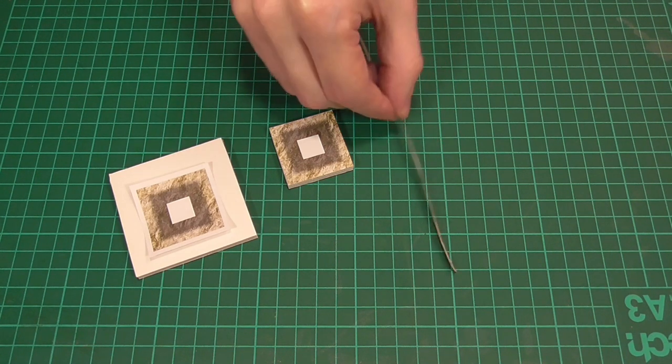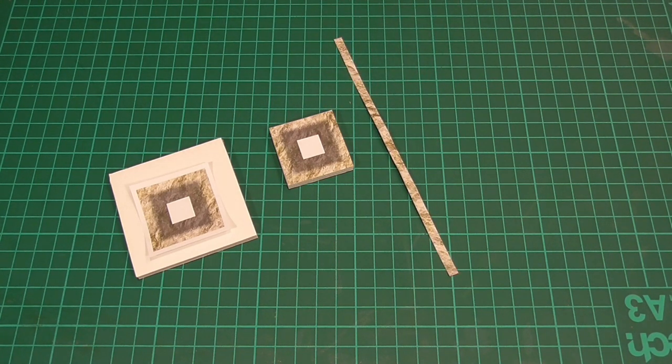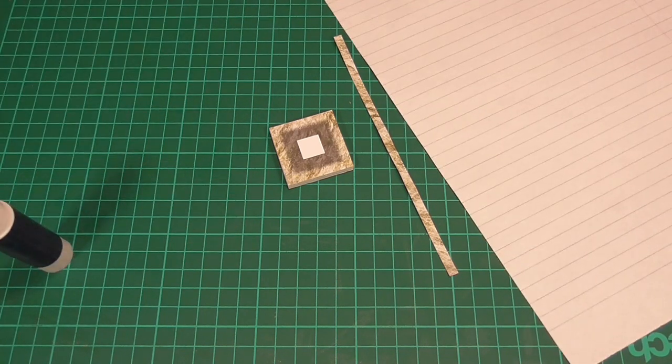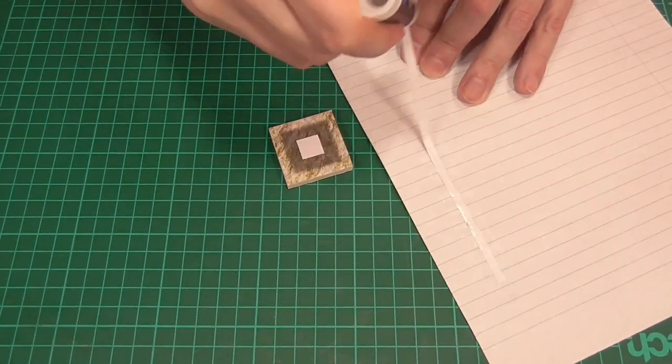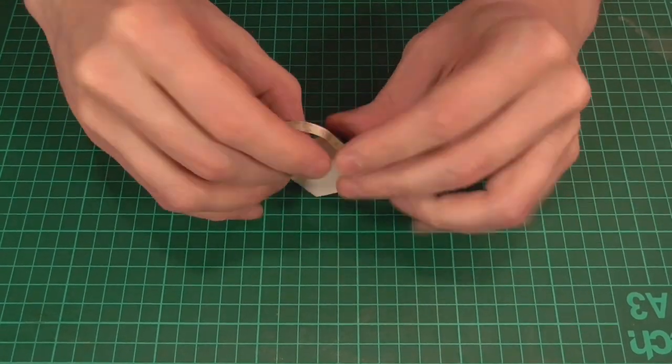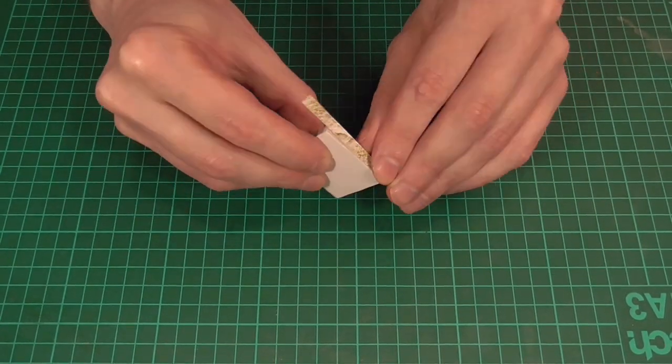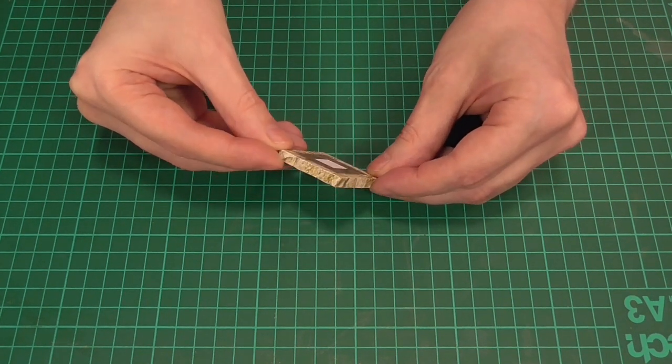And we'll also need to cut out a strip of the plain stone texture that's the same thickness as the foam core itself. Then it's just a simple matter of applying some glue to the back of this strip and using that to cover the exposed edges of the foam core. So that when it's all done it ends up looking something like this.